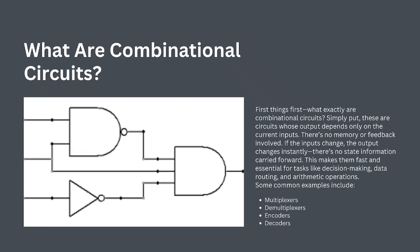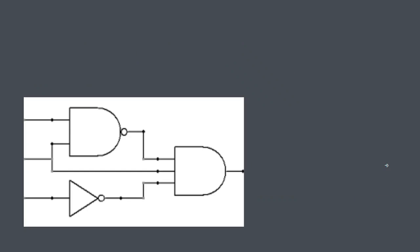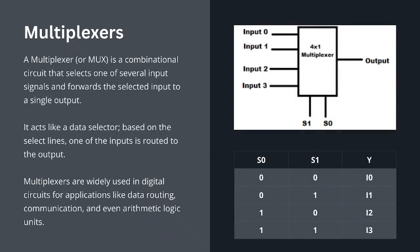Combinational circuits are digital circuits where the outputs depend only on the current inputs, with no memory of previous states. Some classic examples include multiplexers, decoders, and adders. These circuits are essential in computing systems as they enable basic operations like selection, encoding, and arithmetic. Let's begin with the multiplexer, or mux for short. A mux selects one of several input signals and forwards the selected input to a single output — think of it as a digital switch.